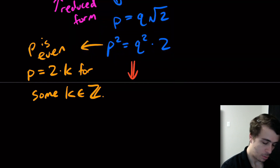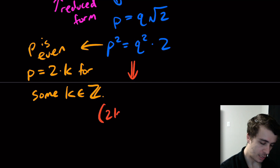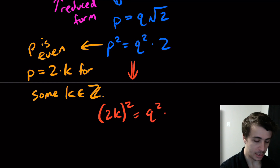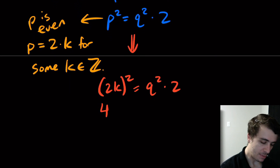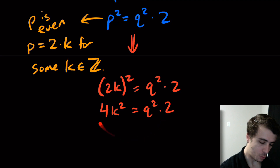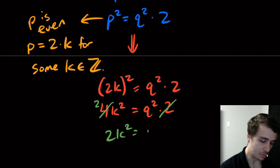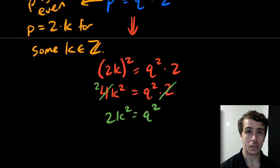Let's substitute p equals 2k back into the equation. So (2k) squared equals q squared times two. That gives us 4k squared on the left and q squared times two on the right. We notice there's a four and a two, so we divide both sides by two to get 2k squared equals q squared.